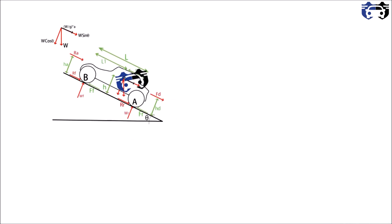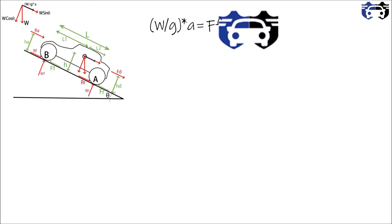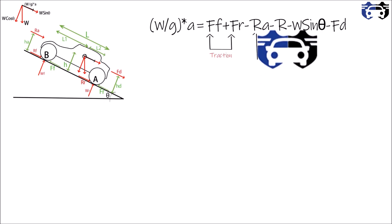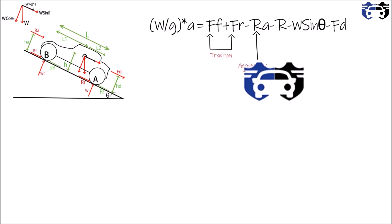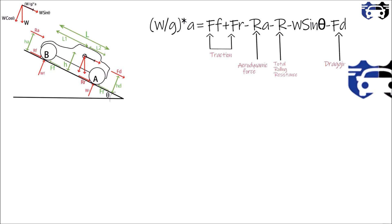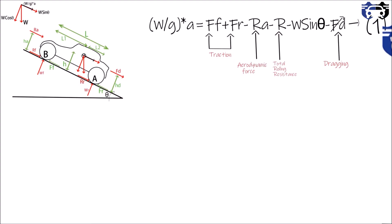Now let's check the derivation. Balancing all forces parallel to the ground: W/g · a = Ff + Fr − Ra − R − W·sin(theta) − Fd. Here Ff and Fr are the traction forces, Ra is the aerodynamic force, R is the total rolling resistance. Since we are not considering a car pulling anything, Fd equals zero. This is equation 1.